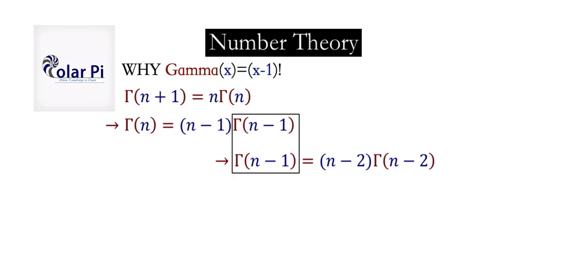And so we go in this manner all the way to gamma of 2. Because whatever number n is, as we're descending by subtracting 1 each time, we'll eventually get to gamma of 2. And so gamma of 2, we would know then, is equal to 2 minus 1 times gamma of 2 minus 1.